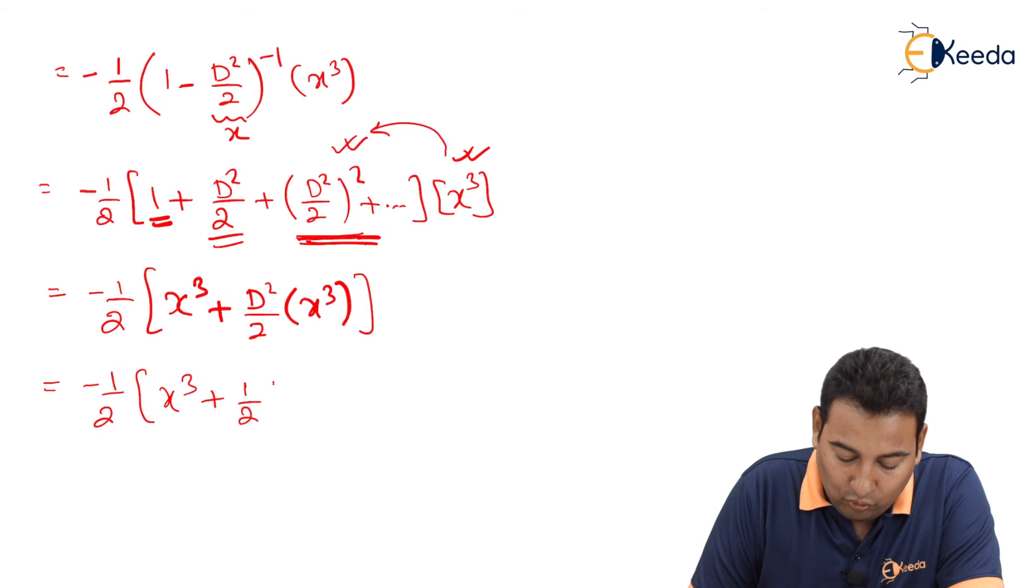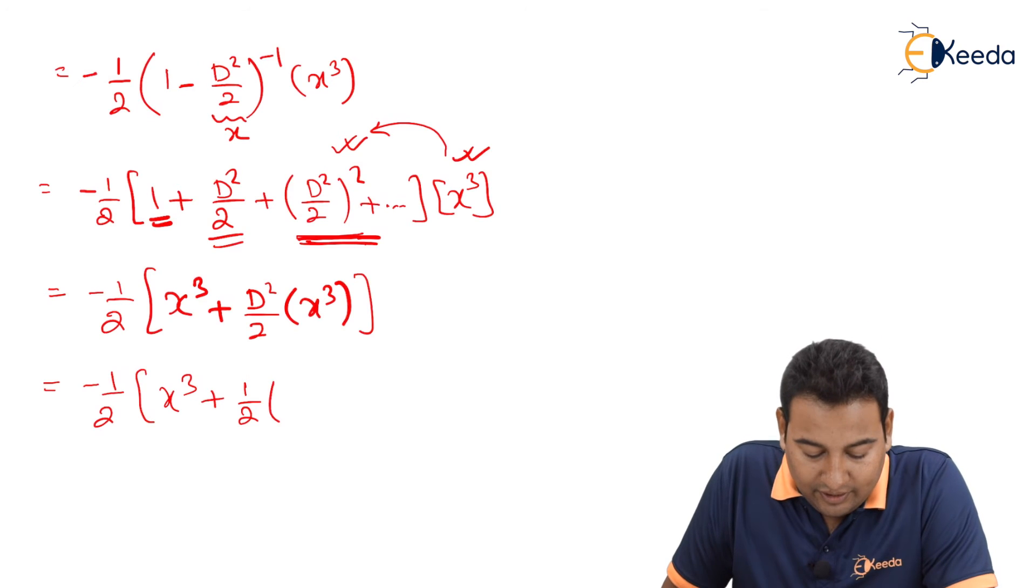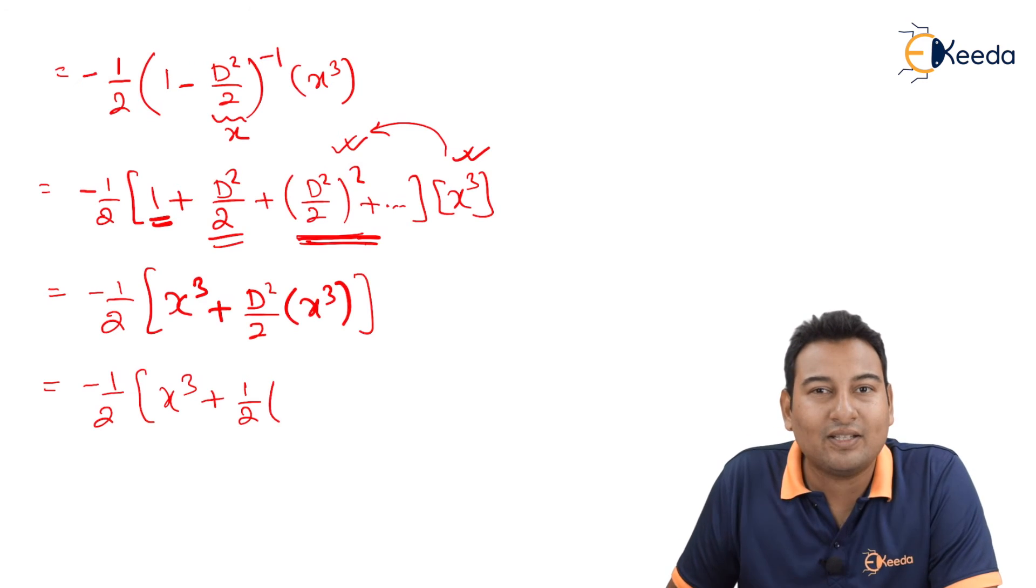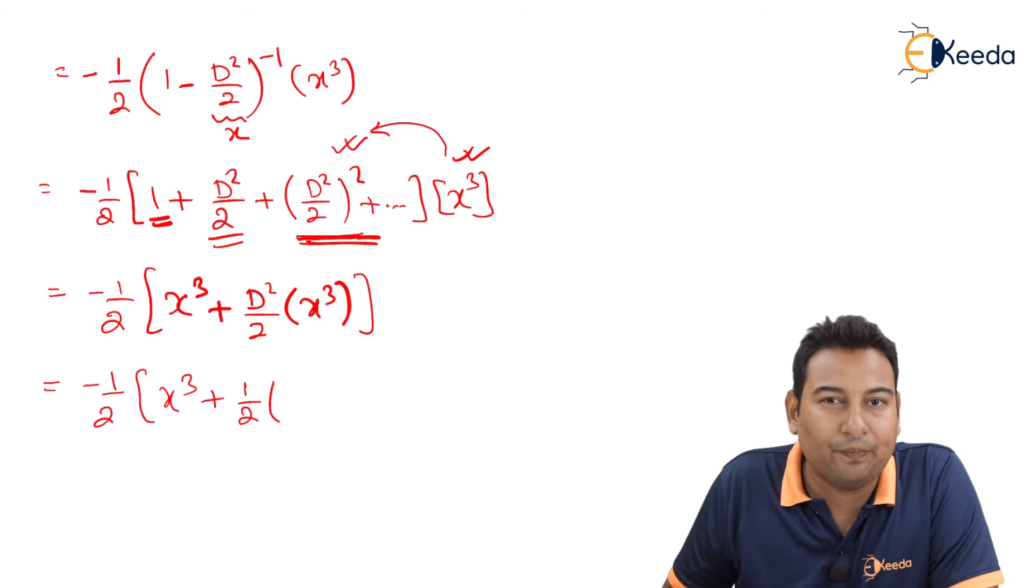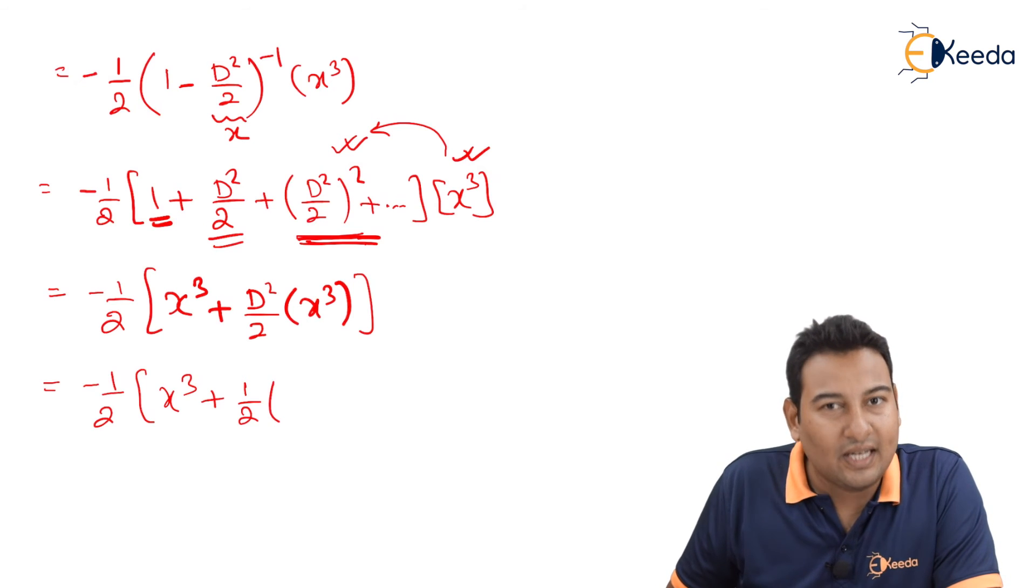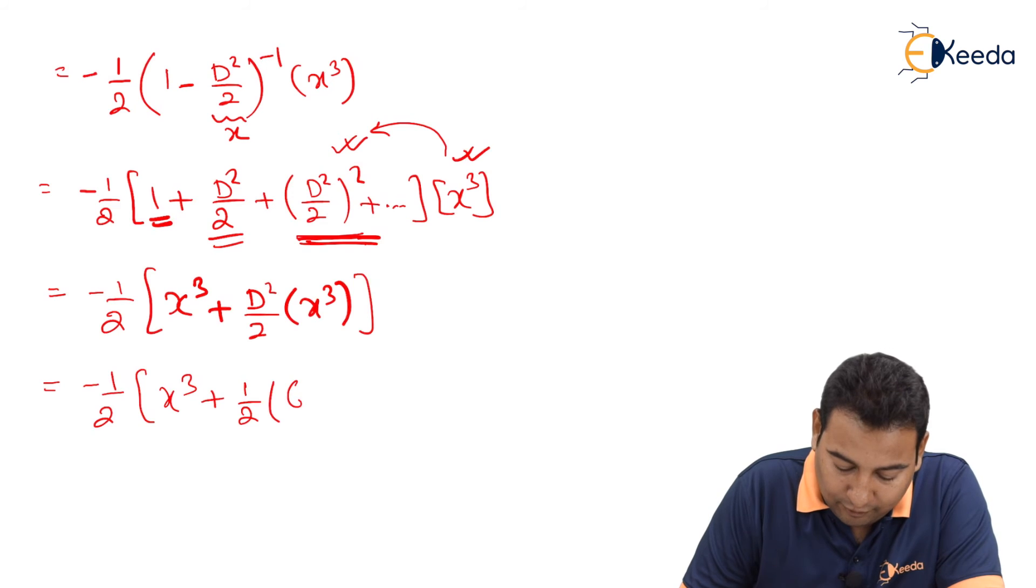This is 1 upon 2 outside. D² of x cube means double derivative of x cube. First is 3x², second is 6x.